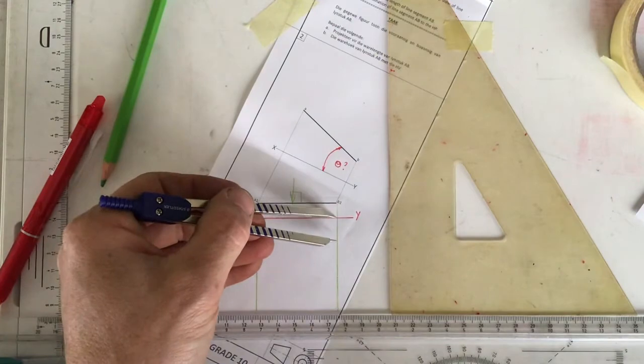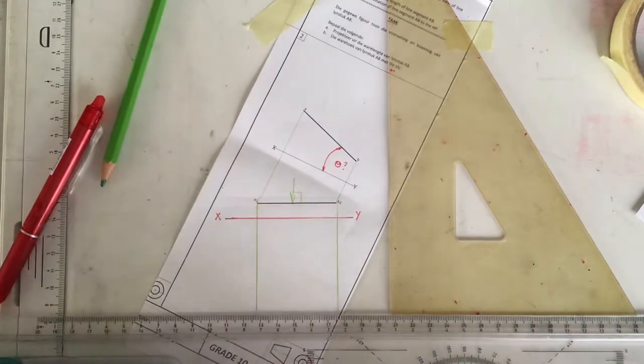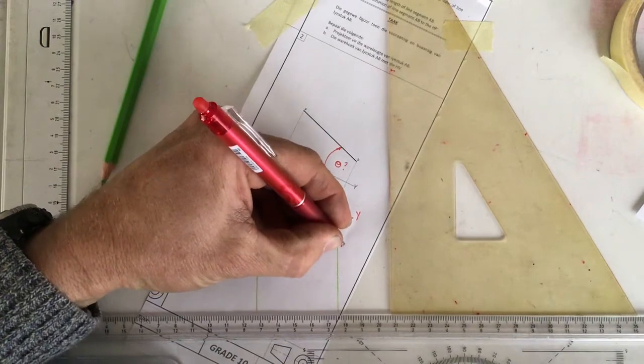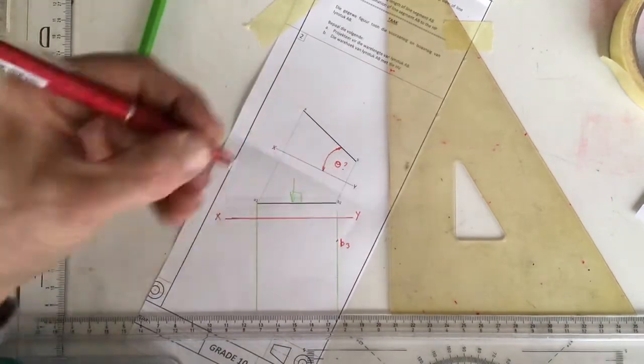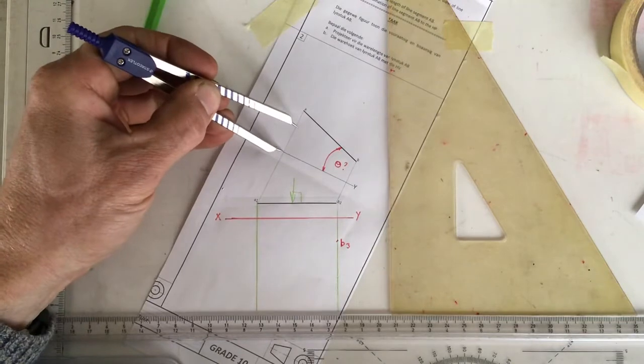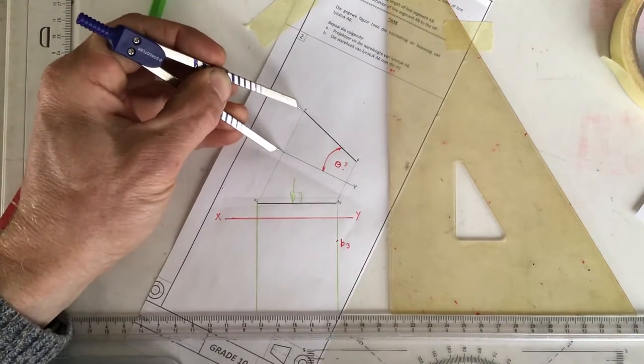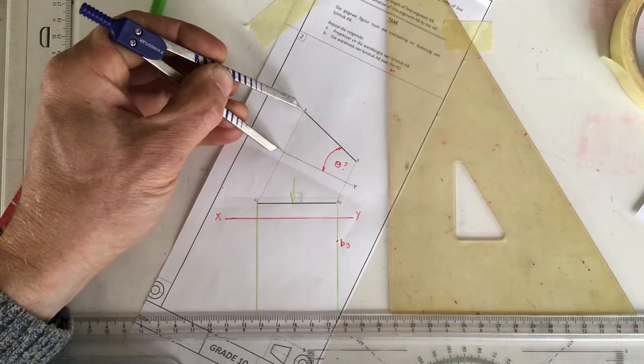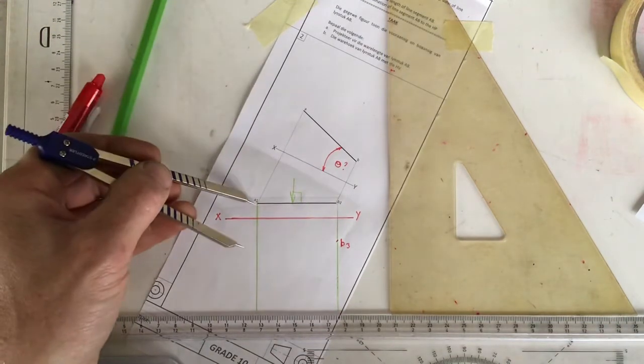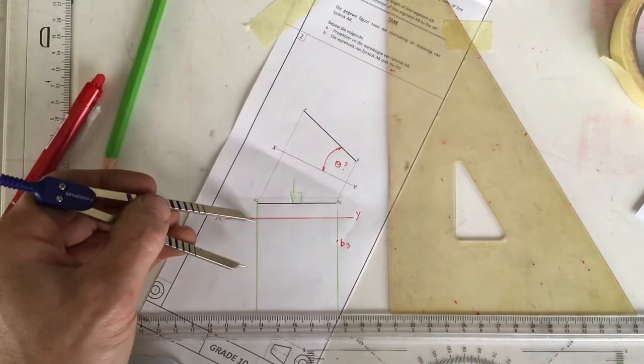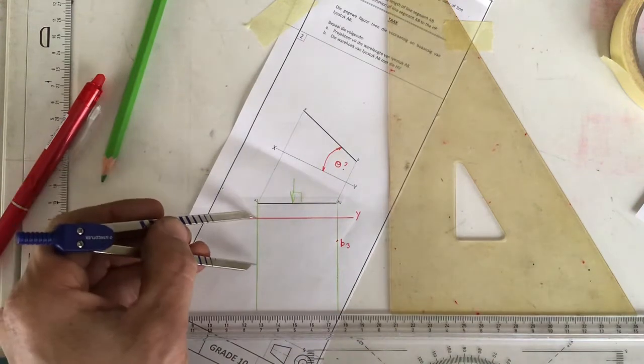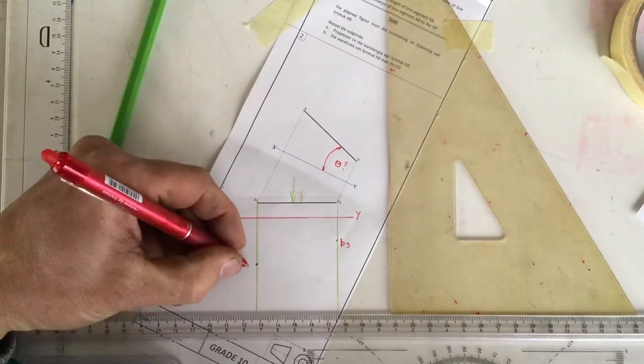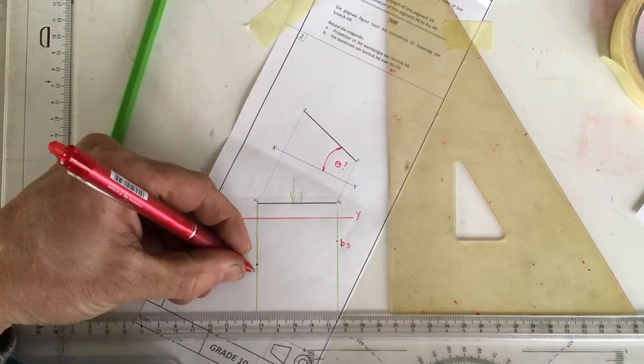I come down to the new XY axis and I mark off B, you can call it B3, or you could label it as a very big bold capital letter B. I'm going to take my next measurement from the XY axis to A over there. I find A1 over there. I come down to the new XY axis and I mark off that measurement to A and we're going to call that A3 over there.